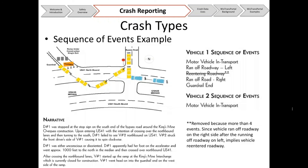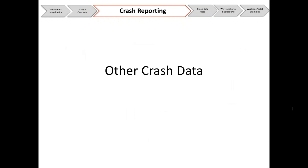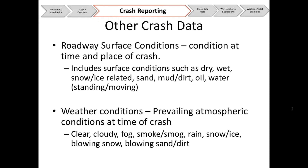Other elements in the crash database include roadway surface conditions — the condition at the time and place of the crash — such as dry, wet, snow, ice-related, sand, mud, dirt, oil, or water (standing or moving). This is a multi-select field, so an officer could select multiple conditions. Weather conditions describe the prevailing atmospheric conditions at the time of the crash: clear, cloudy, fog, smoke or smog, rain, snow or ice, blowing snow, or blowing sand or dirt.